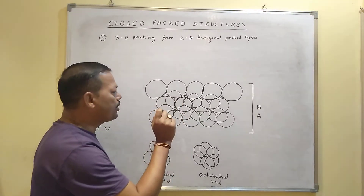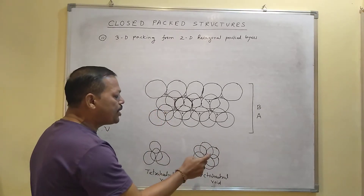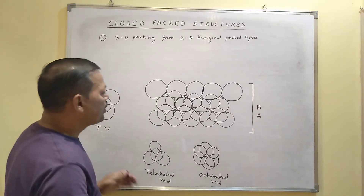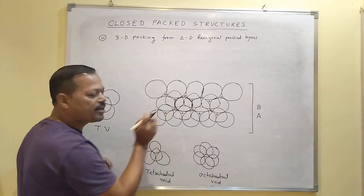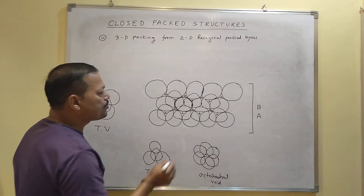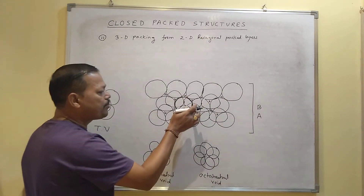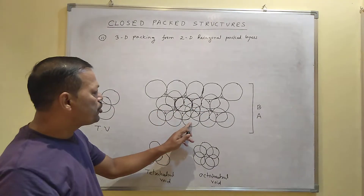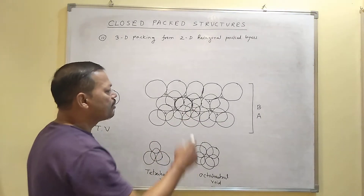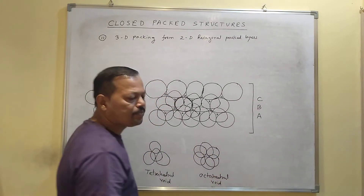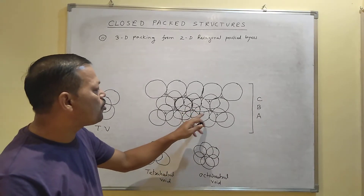You can place the third layer particle above the tetrahedral void, but you can also place it above the octahedral void. The octahedral void is the combination of two triangular voids — the first layer produces one triangular void and the second layer produces another triangular void. When the third layer particle is placed above the octahedral void, the position of the first layer, second layer, and third layer are all different.